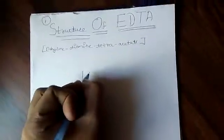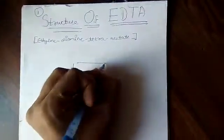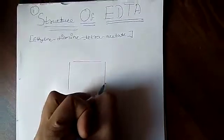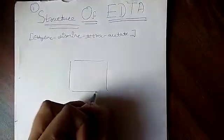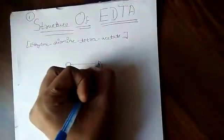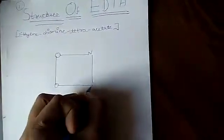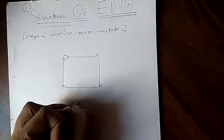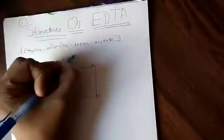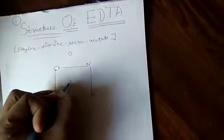First of all, draw a square box just like this. Then write O, N, O, N, then one O here, second here, and metal iron in the center. Draw all coordinate and covalent bonds towards the metal.